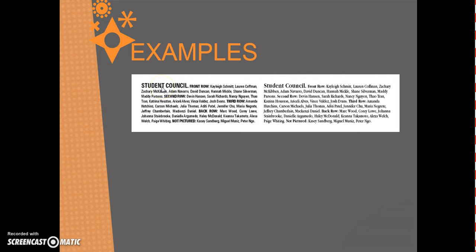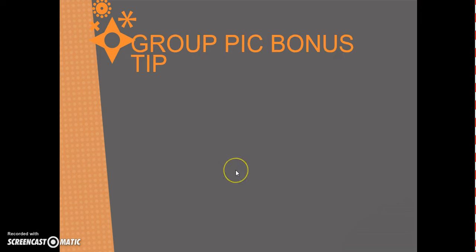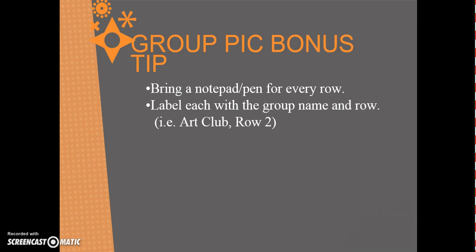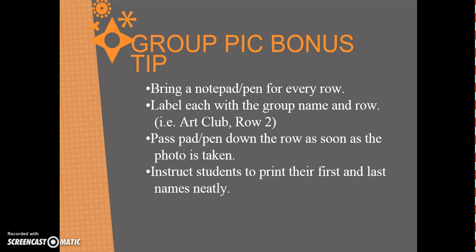We normally leave the group name out if it's above the picture, but see how it's bolded and stands out. Now, this is something we did start doing last year — for a group picture, we just brought a notepad and a pen and then passed it down the row so they wrote their first and last names. Sometimes with big groups it's hard to tell, especially with eighth grade band or choir. That way they can't say their name was spelled wrong. Make sure we tell them to label each row — row one, row two — and then just pass it down so students can print their first and last names in readable form.